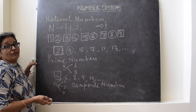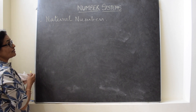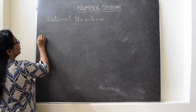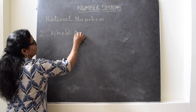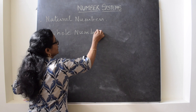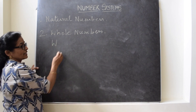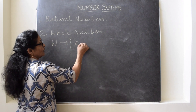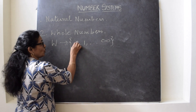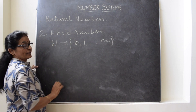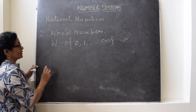Now the second category under this number system is whole numbers. Whole numbers are represented by capital W. They start with 0 and they go up to infinity, meaning the smallest whole number is 0, but there is no greatest whole number.